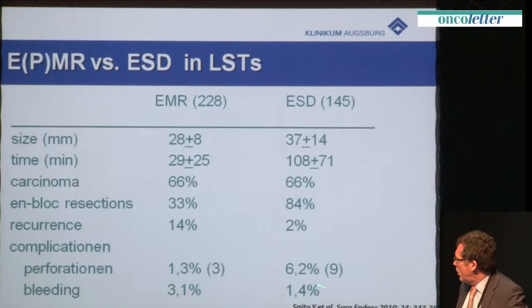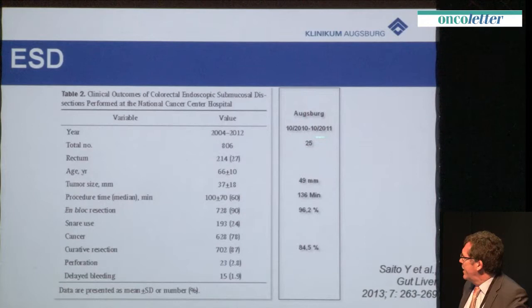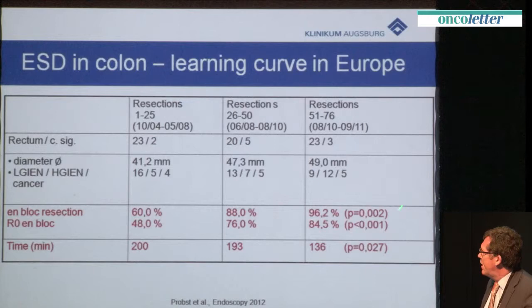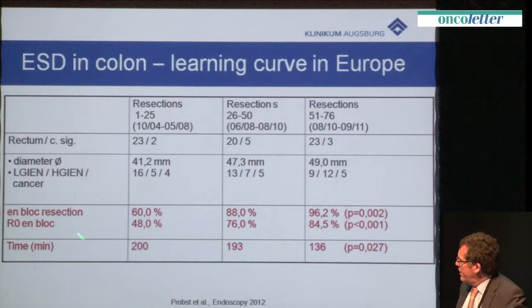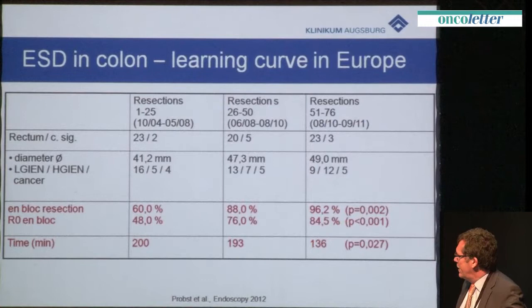This is data again from Dr. Saito from last year and our data from one year. The lesion size in our clinic averaged five centimeters and it takes long — about two hours even in Japan. We achieved an en bloc resection rate of 96% and a curative resection rate of 85%, and this reflects our learning curve. We started 10 years ago with very limited experience and now have data comparable to colleagues in Japan. The only remaining disadvantage is the time required.